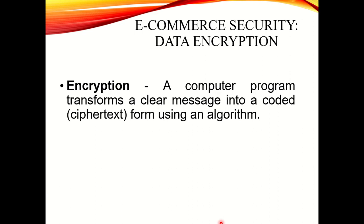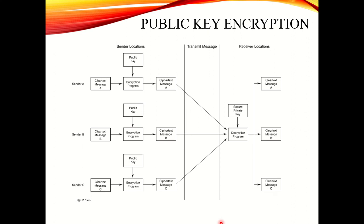If someone attacks or interferes with your connection, for example intercepting an email containing a list of employees with their health numbers, they cannot open it without the encryption key. This is a public key encryption scheme — various senders encrypt messages, which are then decrypted using a secured private key to produce clear text.